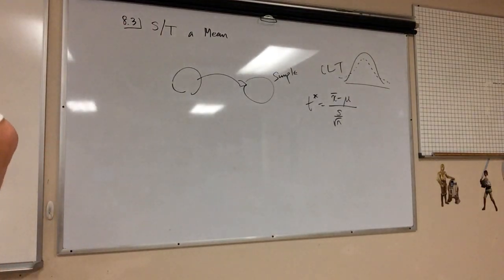Number two, student t-distribution has the same general bell shape with a wider shape that reflects the greater variability. So this is the fatter tails. Number three, student t-distribution has a mean of zero. Standard deviation is one. And then standard deviation of the student t-distribution varies with the sample size and it's greater than one. Number five, as the sample size n gets larger, student t-distribution gets closer to a normal distribution.